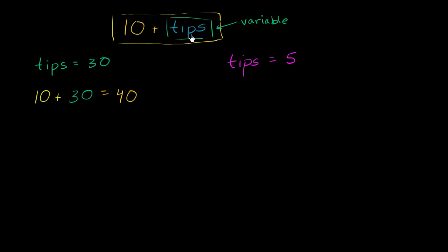Now I go back to this expression. The total I make is my hourly wage plus the $5 in tips, which is equal to $15. As you see, this entire expression, the 10 plus tips, it changed depending on what the value of the variable tips is.